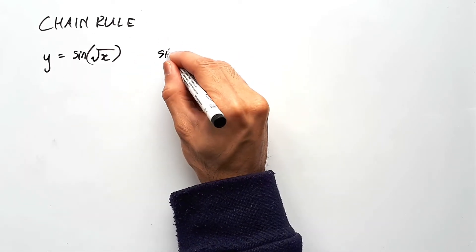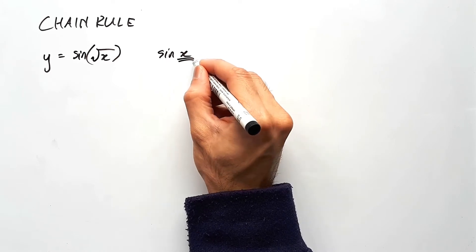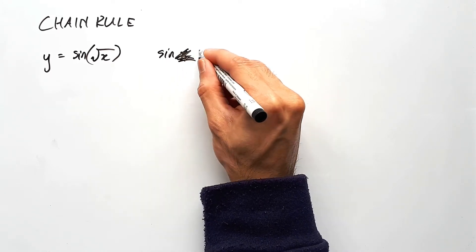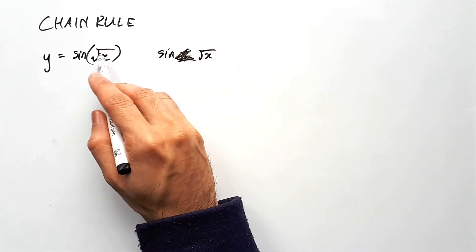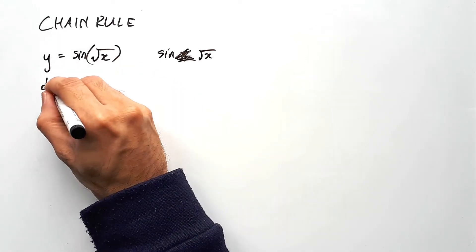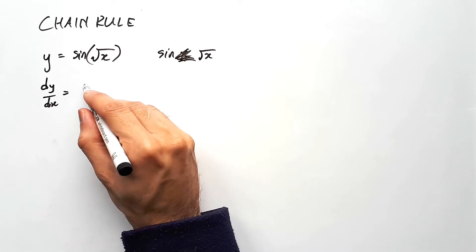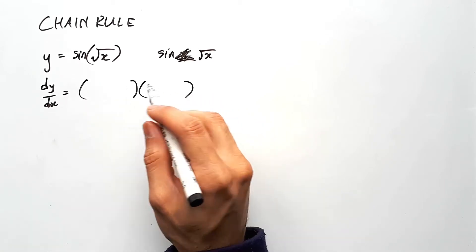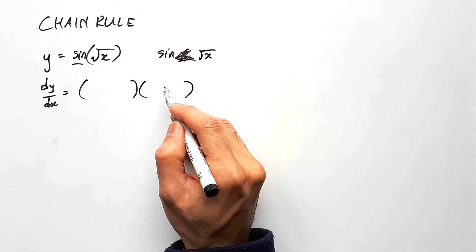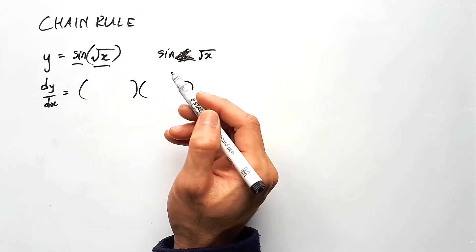Normally a sine function would simply be sine of x. But because it's not just x, but now it's been replaced for the square root of x, there's something special going on in there. And so for the derivative, in terms of a shortcut format, we're going to just set up two brackets here, one representing the outer derivative, and the second bracket representing the inner derivative.